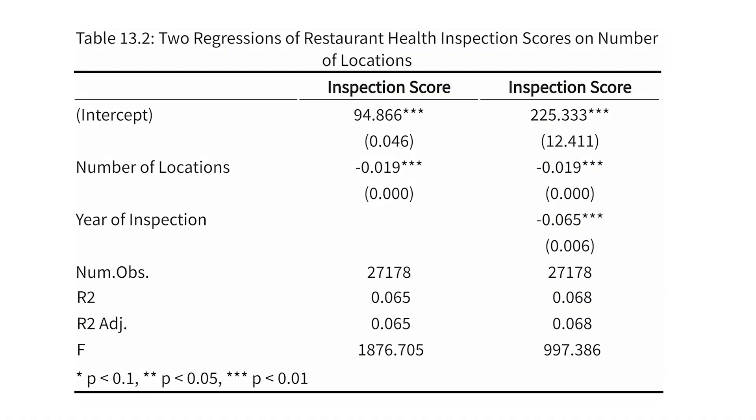Another statistic you'll see is R-squared adjusted. This takes R-squared and makes a slight adjustment: R-squared will always go up as you add more variables simply because you have more flexibility to fit the data — even if you add completely nonsense variables. R-squared adjusted instead asks whether the variables you've included explain more than you'd expect if you just added random noise. I actually use R-squared adjusted less than R-squared because R-squared is easier to interpret, though that is a more contentious opinion.